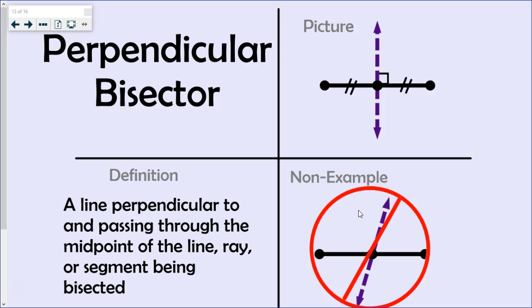Here's another example. The reason it's a non-example is because this bisector does not divide the segment into two equal parts. In addition, it's not perpendicular either. Notice it does not form a right angle. It actually makes some other angle. Therefore, it's not perpendicular.